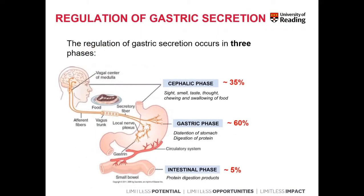To better understand how these hormones interact with each other, forming a network of information to regulate the function of the stomach, we divide gastric secretion and gastric activity into three phases: the cephalic phase, the gastric phase, and the intestinal phase, which occupy 35%, 60%, and 5%, respectively, of the overall activity of the stomach.